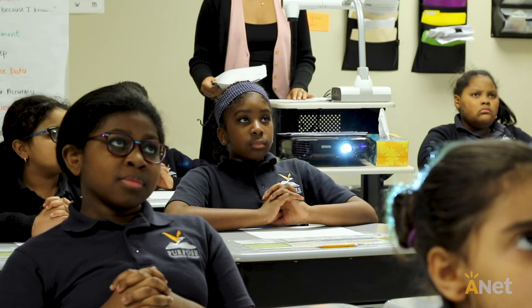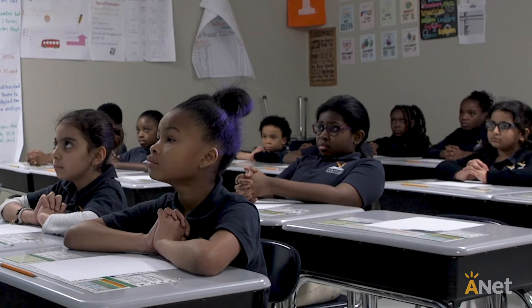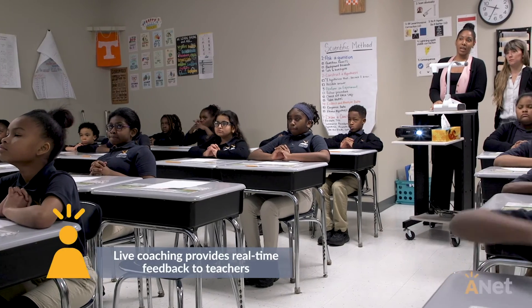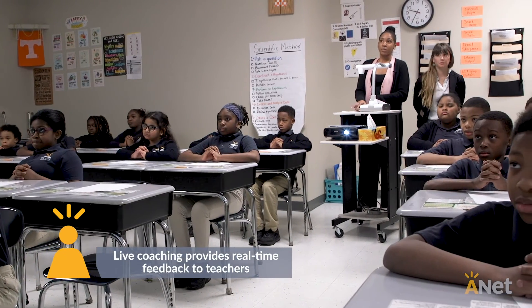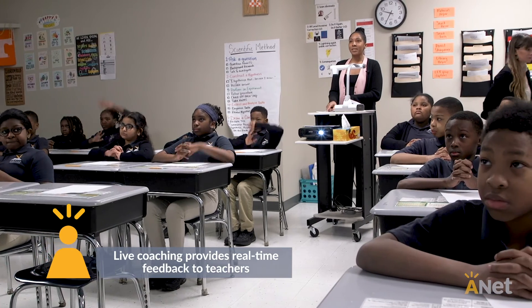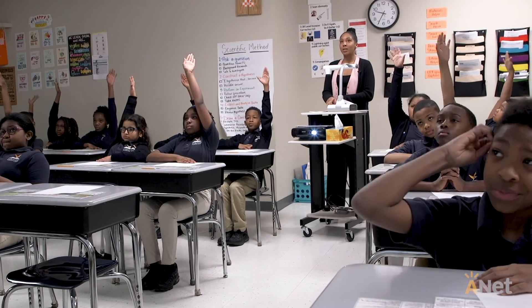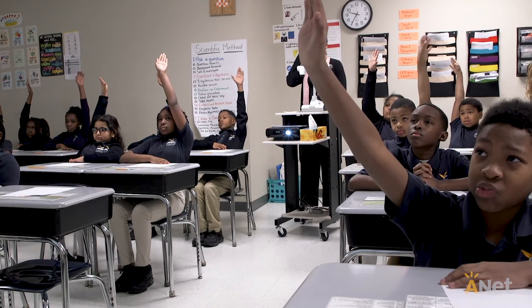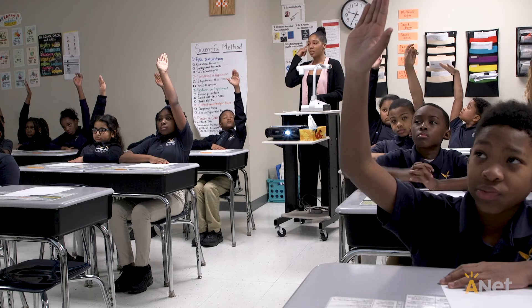Okay scholars, so we struggled yesterday when we were doing multi-digit multiplication — we struggled with using our area model. So we have two scholars' work. Both of them used their area models and the U.S. standard algorithm. What do you notice is the difference? If we're looking at a whole number and we know that using our area model we need to focus on place value, what do you notice is the difference between these two scholars' work?